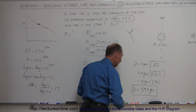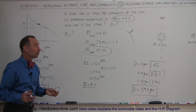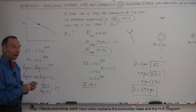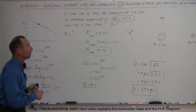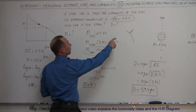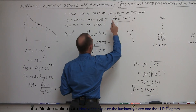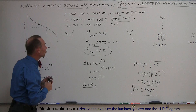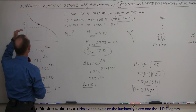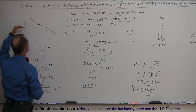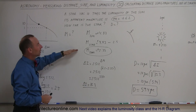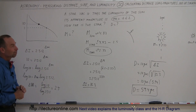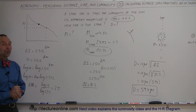That's a nice example of how we use the HR diagram to find the distance of stars. No matter how the problem is given, as long as we can determine the apparent magnitude by measuring it and the absolute magnitude by finding the relationship to another star or by placing it at 10 parsecs, that's how we do it. Thank you.